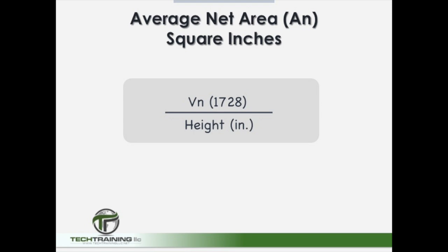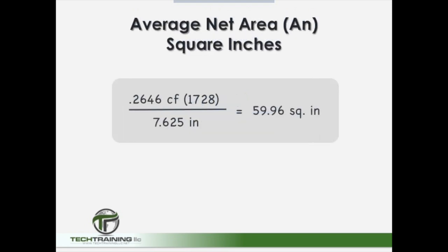Now that we have our net volume, we can calculate our net area. We do this by converting our net volume in cubic feet to cubic inches by multiplying it by 1728, the amount of cubic inches in a cubic foot, and then dividing this value by the height of the unit in inches. Plugging in our data: 0.2646 times 1728 divided by 7.625 inches gives us 59.96 square inches as our average net area of the unit.